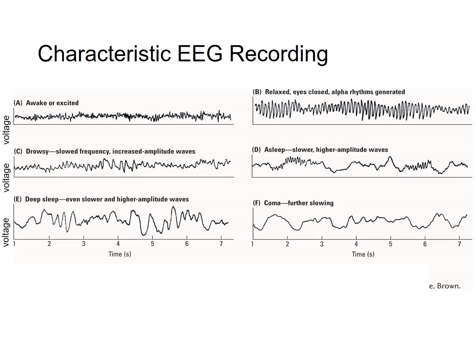Since the 1920s, researchers have known that there are different types of brain waves occurring when one is awake or when one is asleep. In this diagram, you see the many different types of brain waves that can be recorded during different states of arousal.